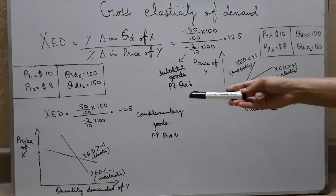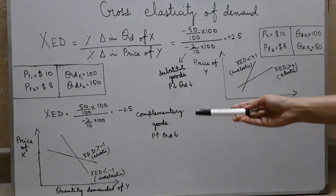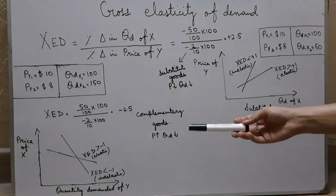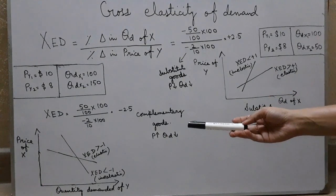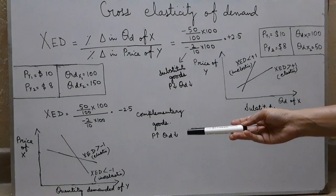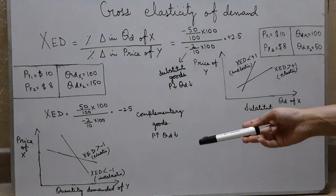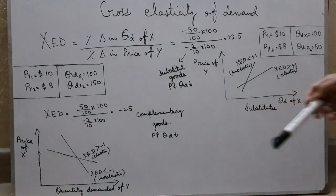So in this case, when the answer comes out to minus 2.5, that clearly shows that these two goods are complementary goods. And if you can see the graph, if the answer is greater than negative 1, it means it's elastic demand. And if the answer is less than minus 1, it means it has inelastic cross-elasticity of demand.